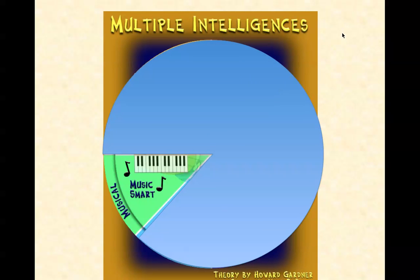Then we have musical intelligence, which shows sensitivity to rhythm and sound. These learners love music and are also sensitive to sounds in their environments. They may study better with music in the background. They can be taught by turning lessons into lyrics, speaking rhythmically, and tapping out time. Tools for these learners include musical instruments, music, radio, stereo, CDs, and multimedia.